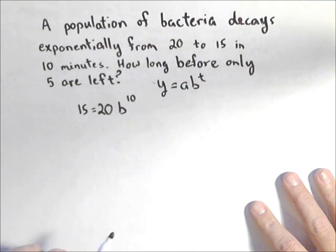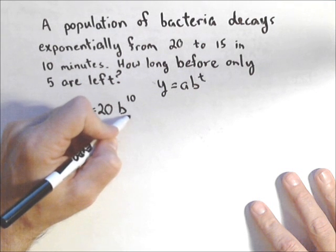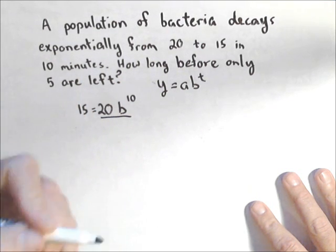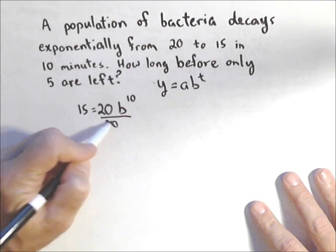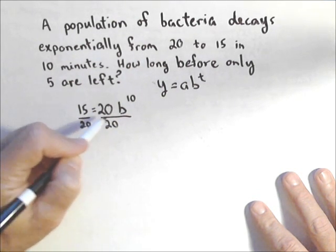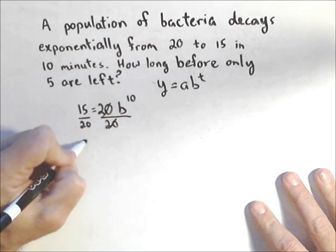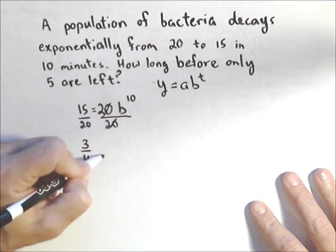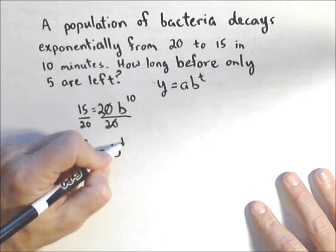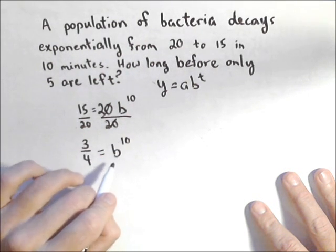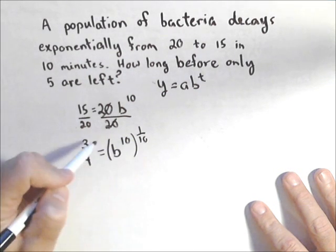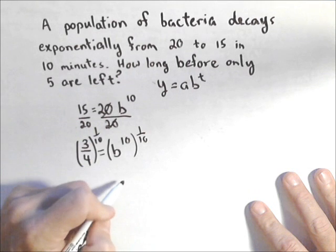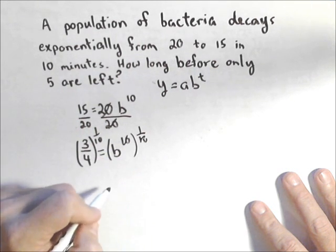We can use the other model, AE to the KT. They're both equally good. So the first goal is gonna be to find our B, because that gives us our rate of decay. We're gonna divide both sides by 20, and I'm gonna reduce that down to 3 fourths equals B to the 10th. Now you don't need logs here to solve. You're just gonna raise both sides to the 1/10th, and I've got my B.